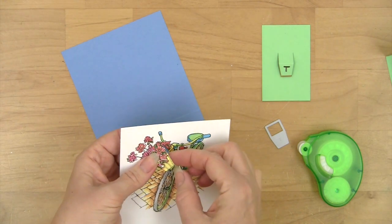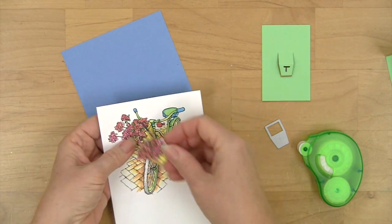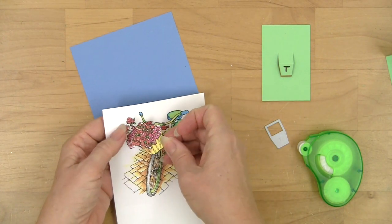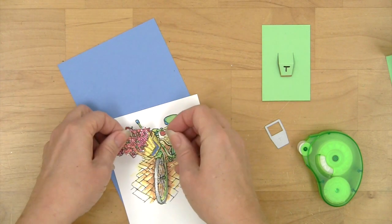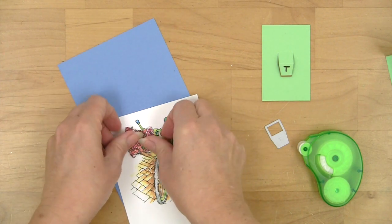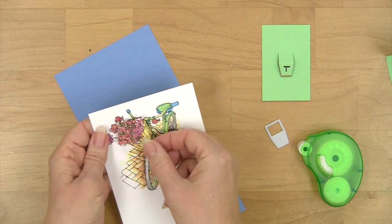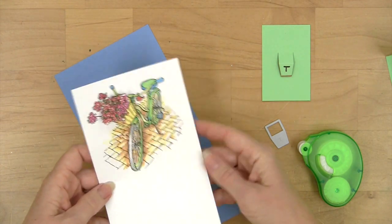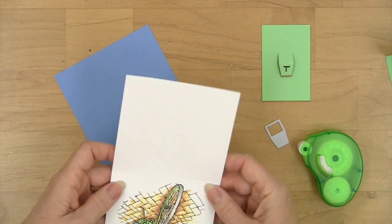Okay, and this one just has a simple fold all the way across. Sometimes I'll score just the outer edges to find that middle point.